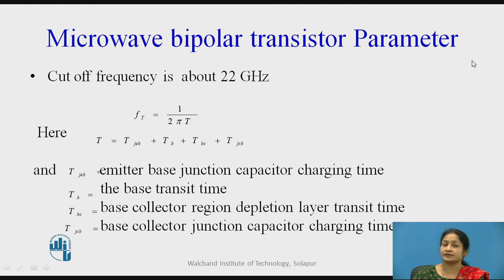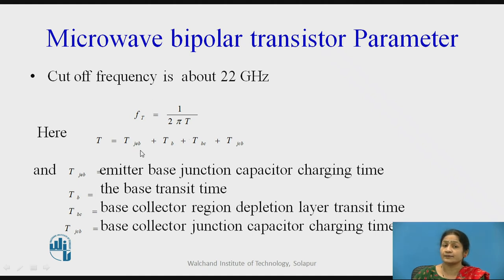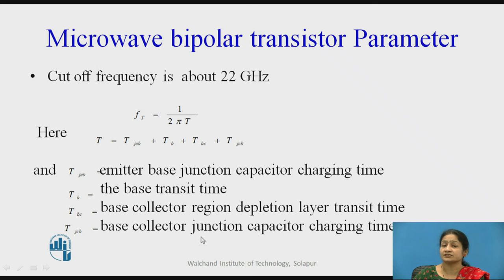Considering the parameters, the cutoff frequency is approximately 22 gigahertz. This cutoff frequency is given by f_T = 1 / (2π·τ), where τ is the transit time. The transit time τ is the sum of τ_jeb (emitter-base junction capacitance charging time), τ_b (base transit time), τ_bc (base-collector depletion layer transit time), and τ_jcb (junction capacitance charging time).